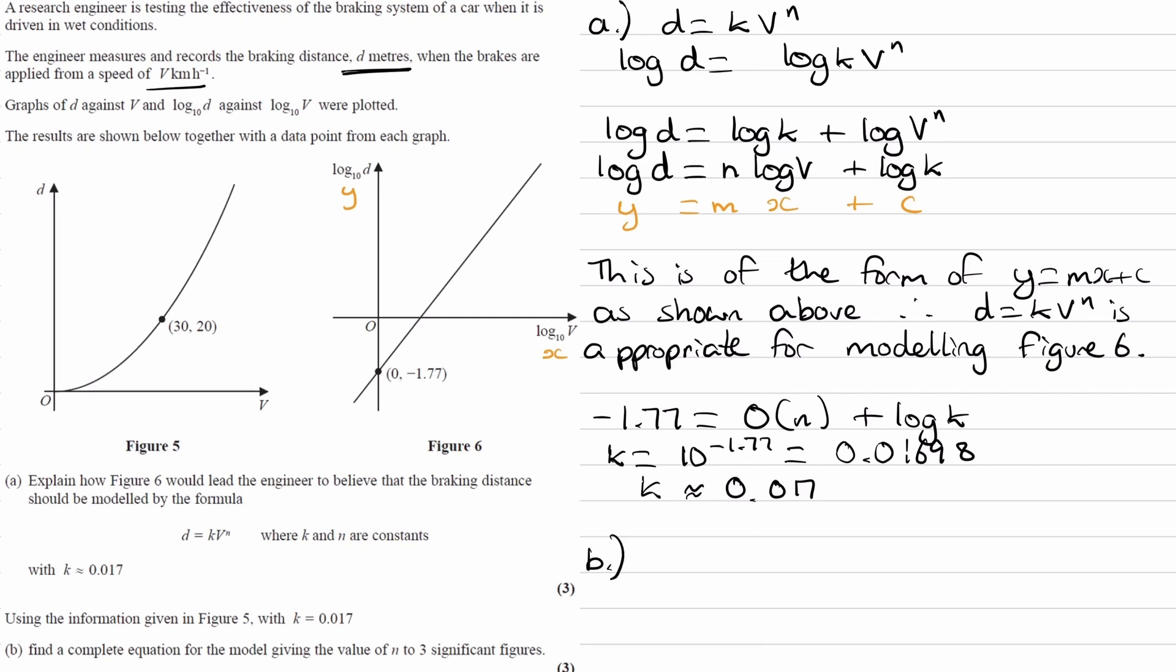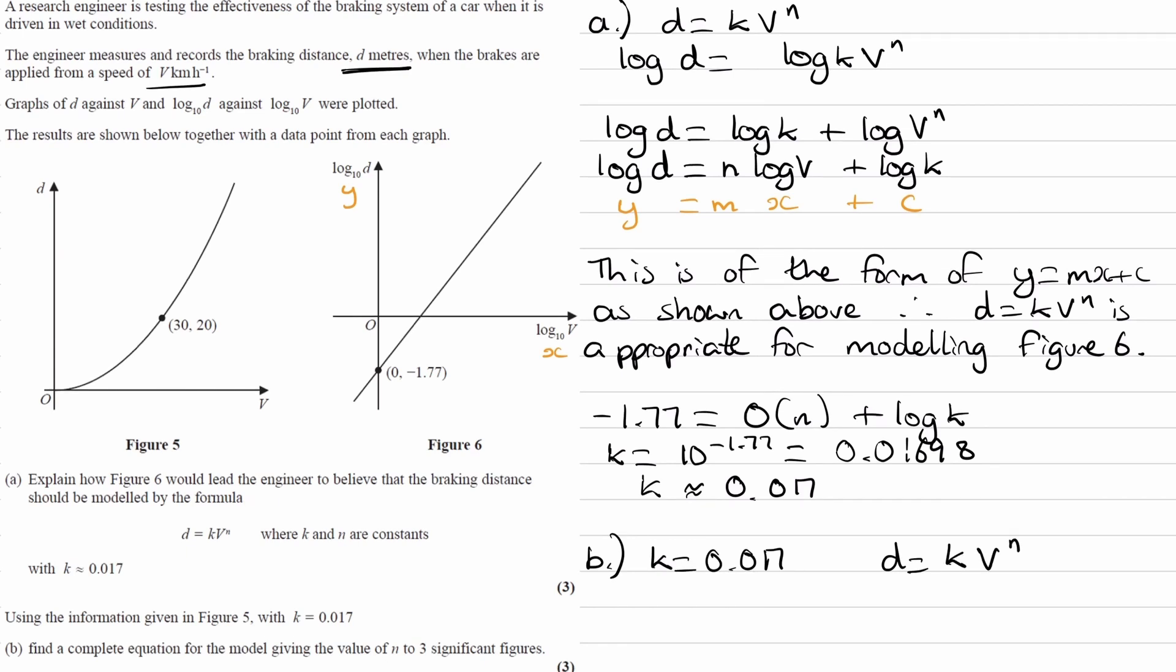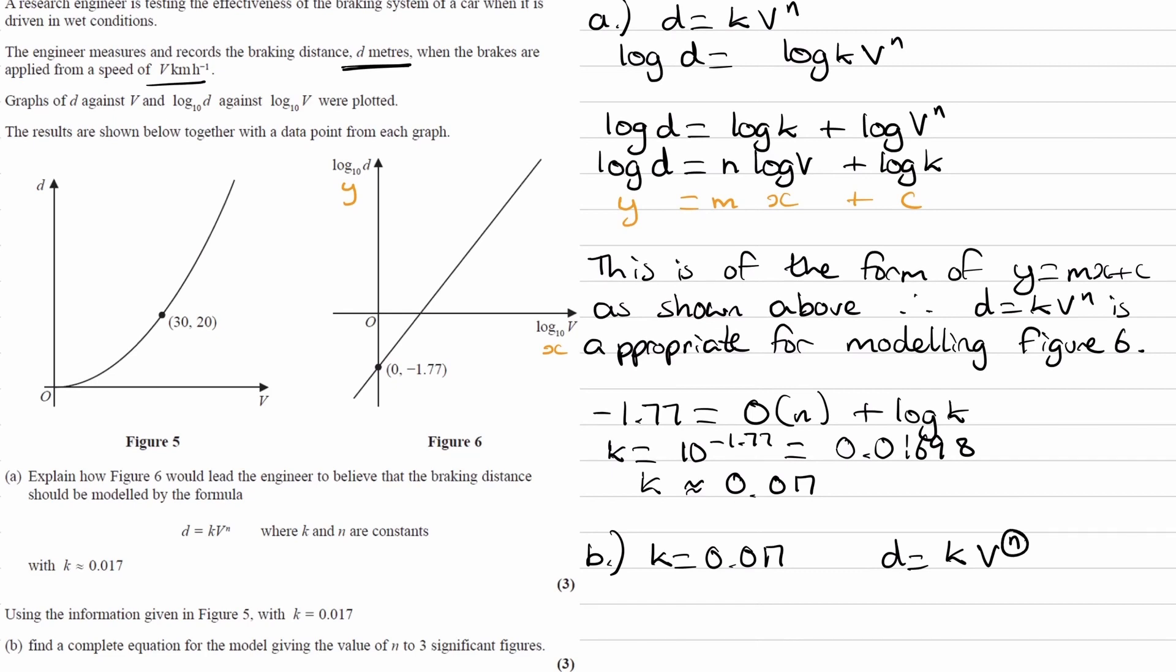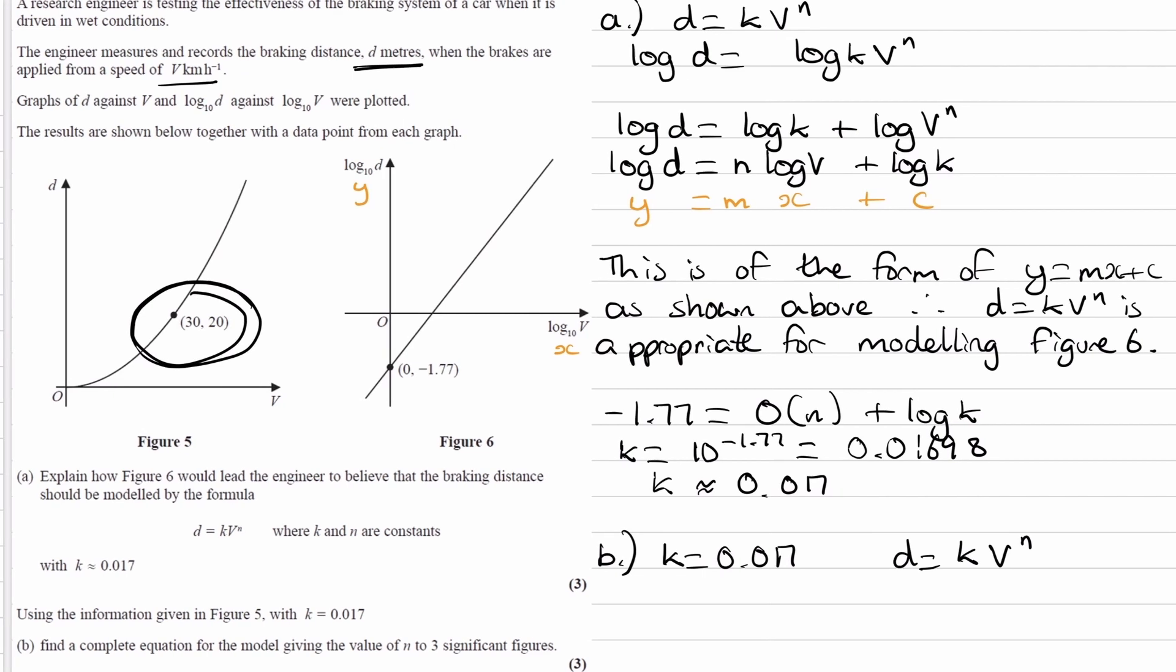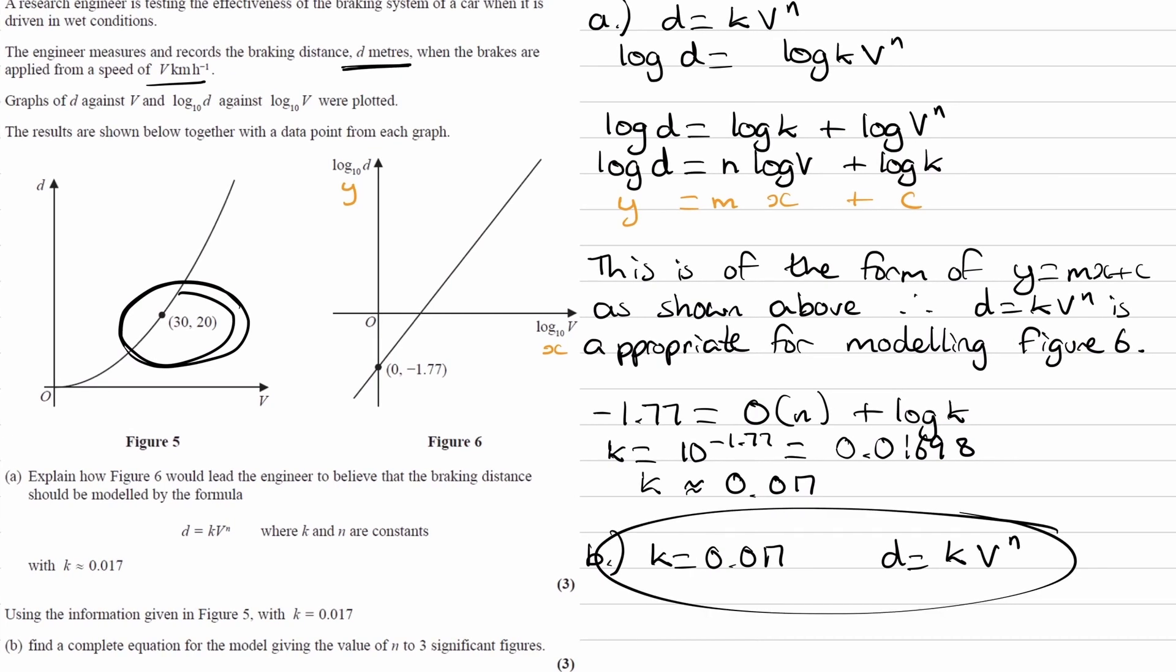Onto part b. So using the information given in Figure 5 with k equals 0.017, find a complete equation for the model, giving the value of n to three significant figures. Okay, so we're using the fact that k equals 0.017. We want to find a complete equation for the model. So if we know that our equation is in the form d equals kv to the power of n, we want to work out what n is. We have what k is already. So the hint for this part would be to use this coordinate along with this information to then work out what n is.